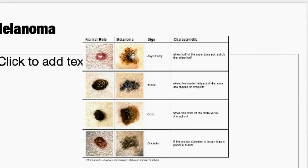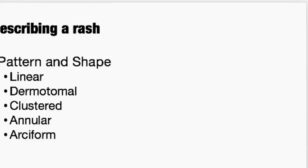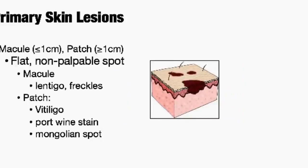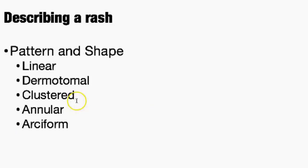Now describing rashes: start with the color and then talk about the pattern or shape. Is it linear? Is it dermatomal? Is it clustered, annular, or archiform? Linear rashes are just that — in a line. Dermatomal tend to be linear or clustered along a dermatome. Clustered is grouped together but not in a linear distribution. Annular is round. Archiform is kind of semi-circle.